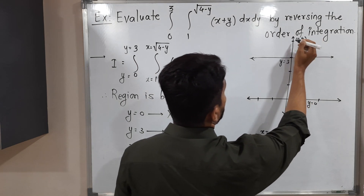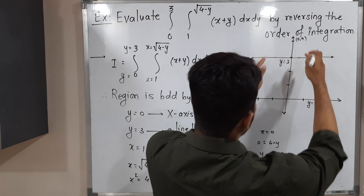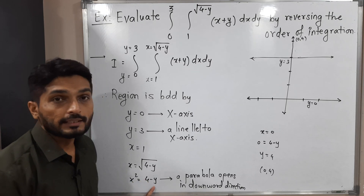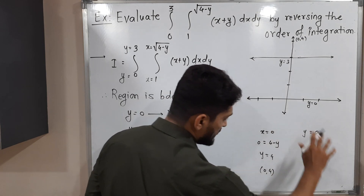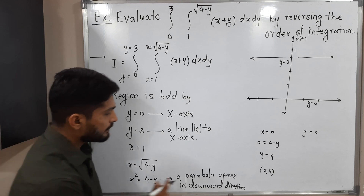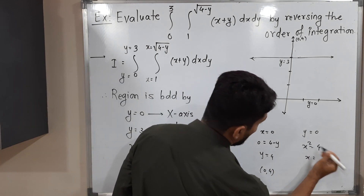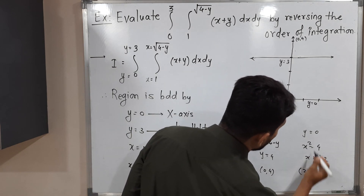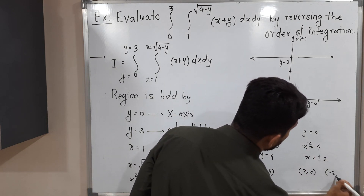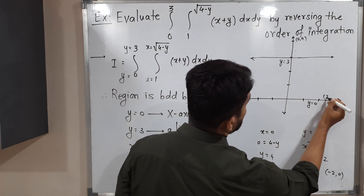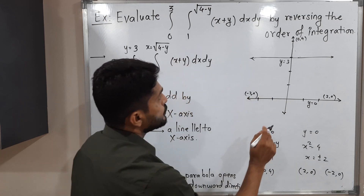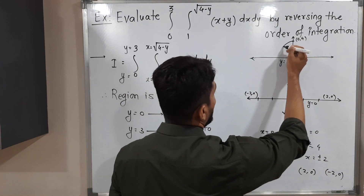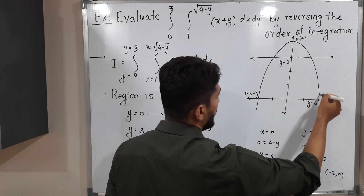Now let me put y equals 0. We get x squared equals 4, so x equals plus or minus 2. This gives us two points: (2, 0) and (−2, 0). The parabola opens downward and passes through these three points, so we can now easily draw it.